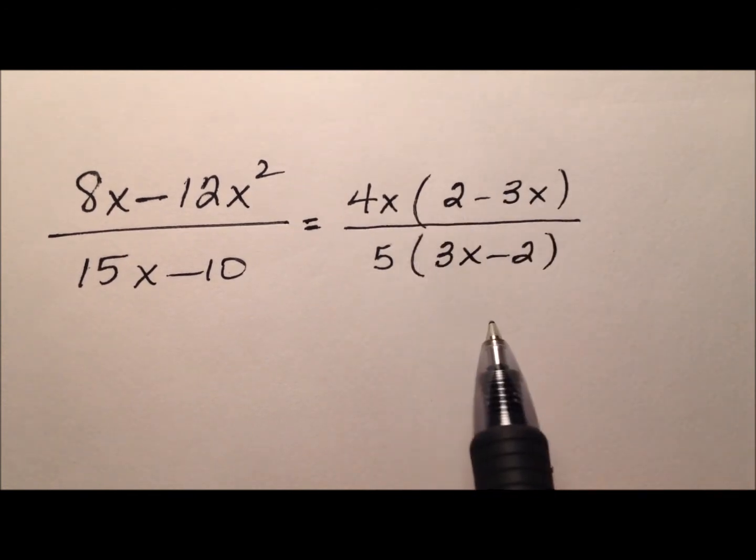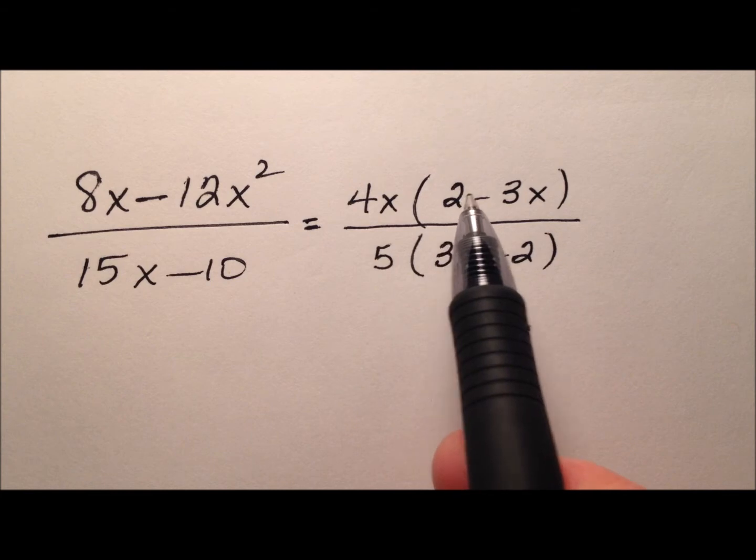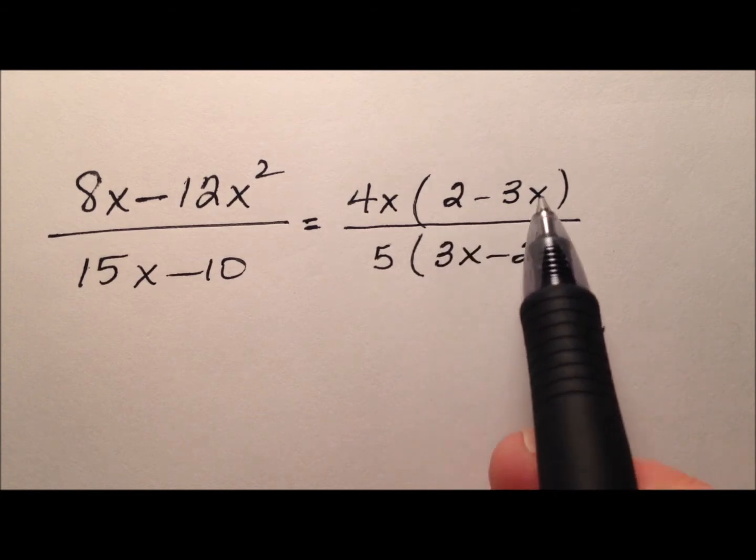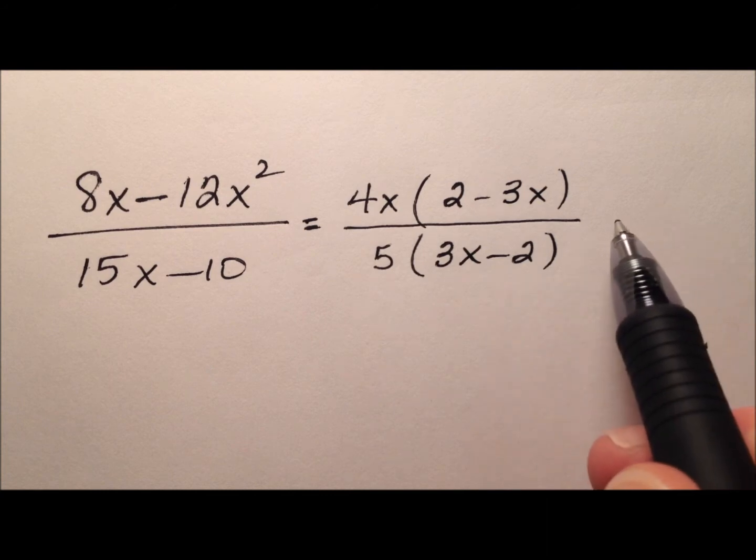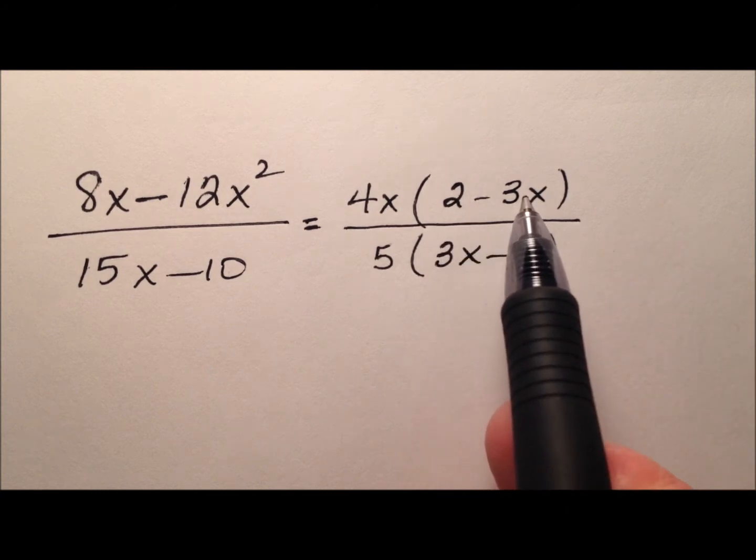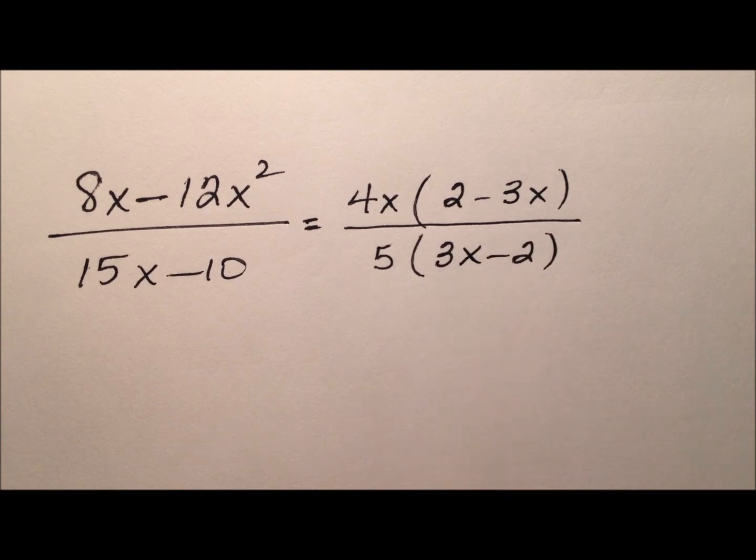And here we are in this situation where they're identical except backwards. They're being subtracted. They're both binomials. They have the same terms. It's just that one has the 2 first and then minus 3x and the other has the 3x and then minus the 2.